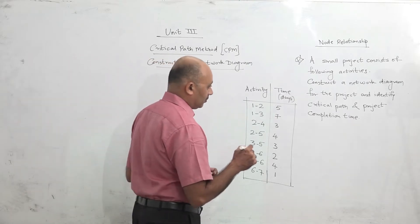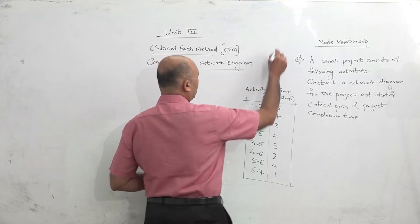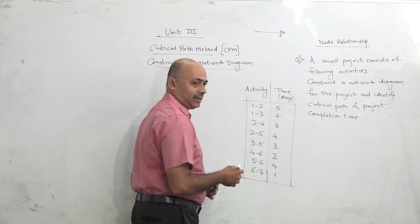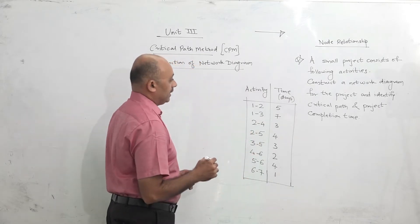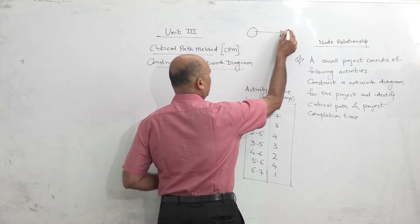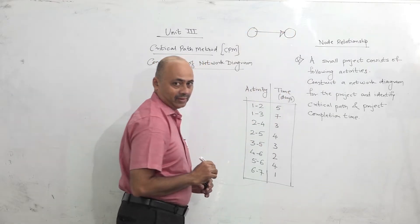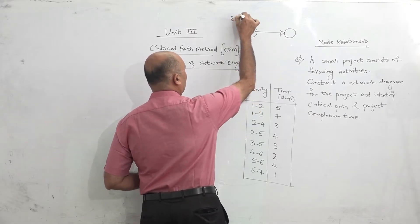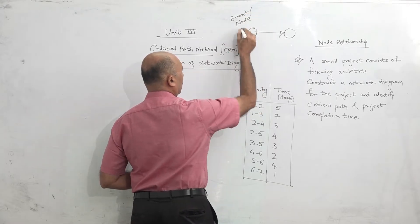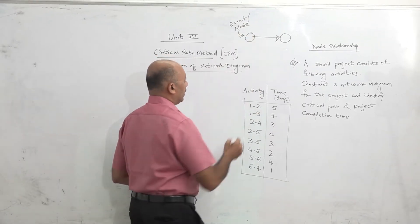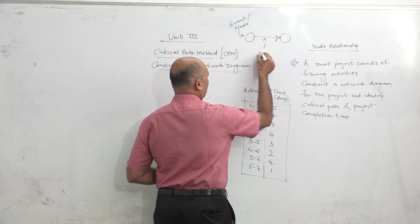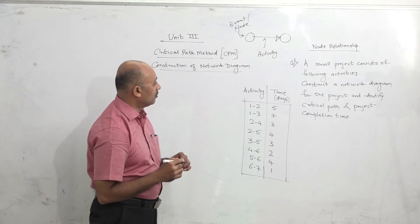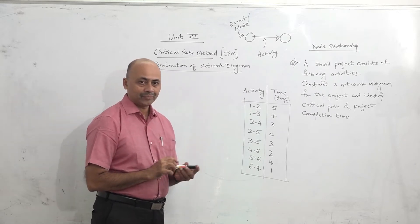The basic concept is activity and event. An activity is represented by an arrow, and it may or may not be given a name. An event is either the starting point or ending point of an activity. An event is also called a node. So either event or node — this circle is called an event or node, and this arrow is called an activity. Activity is always represented by an arrow, and event or node is always represented by a circle.